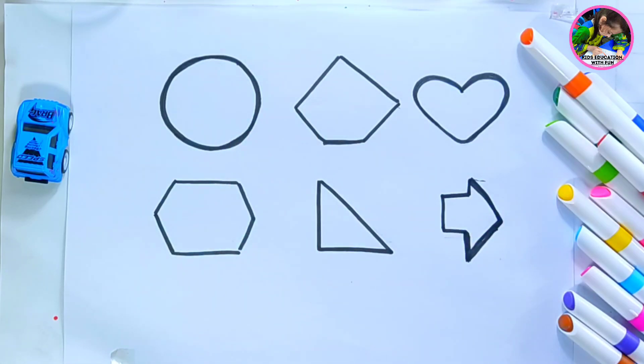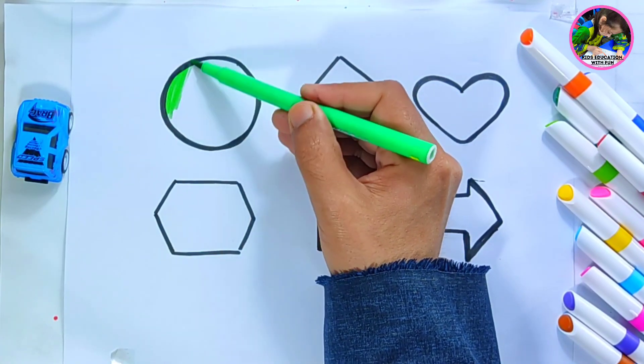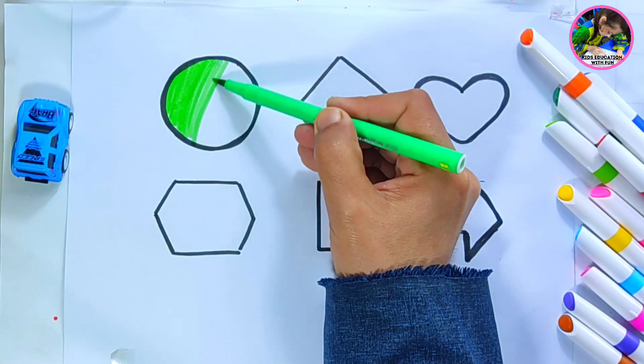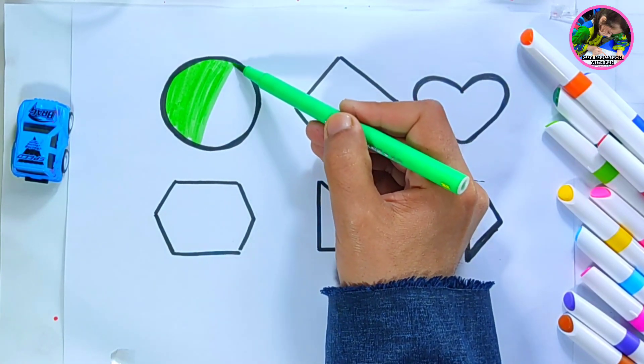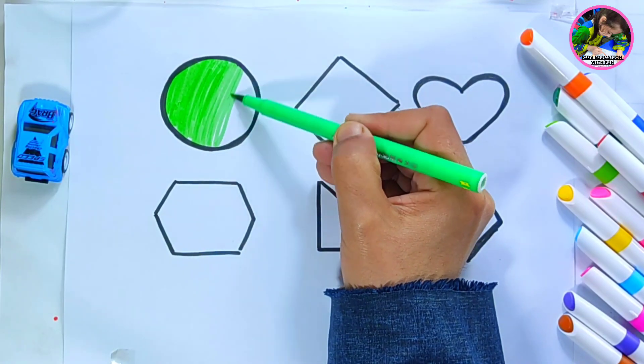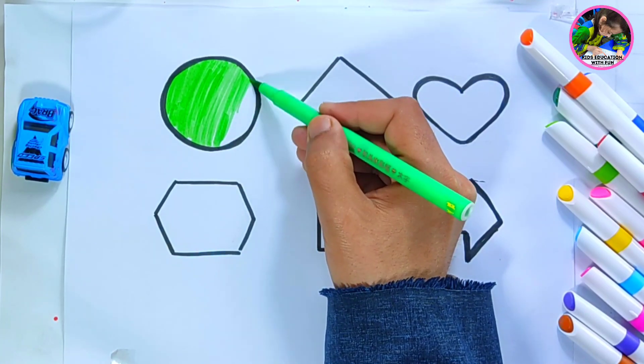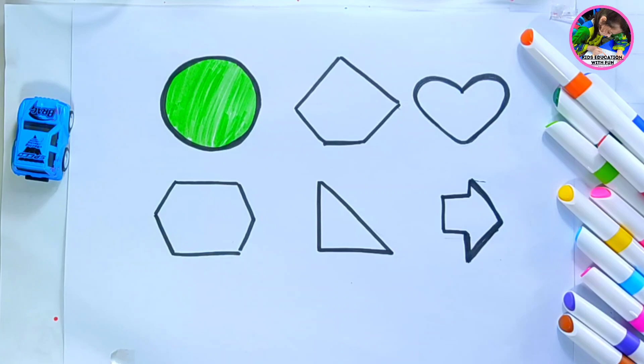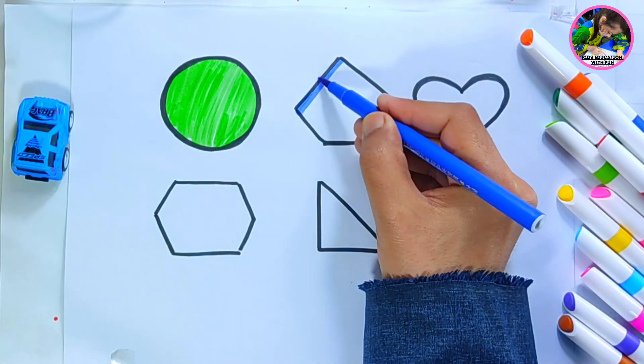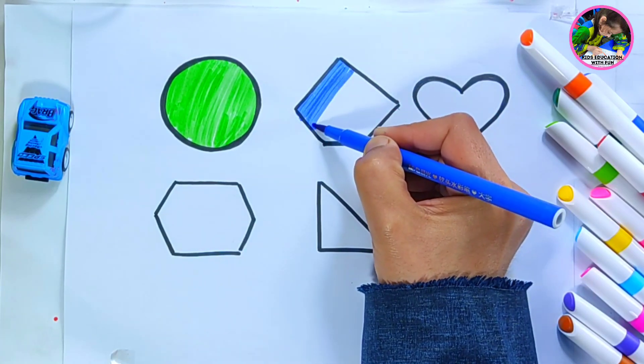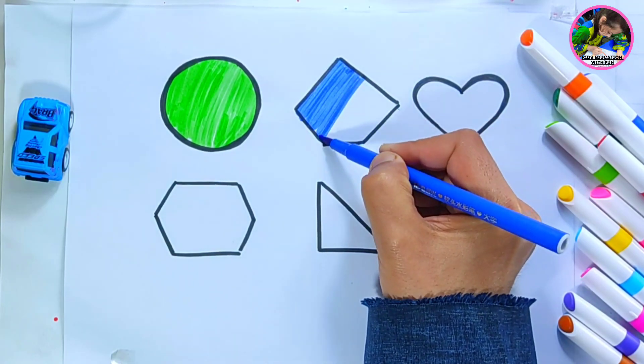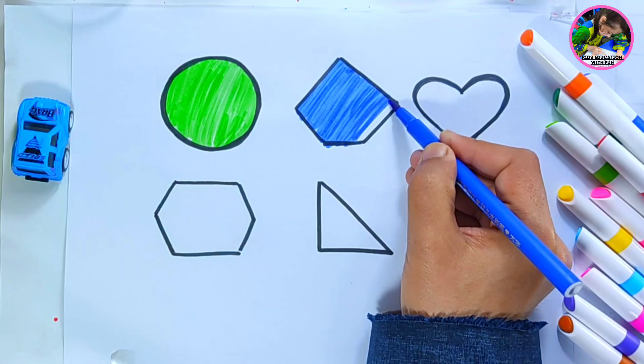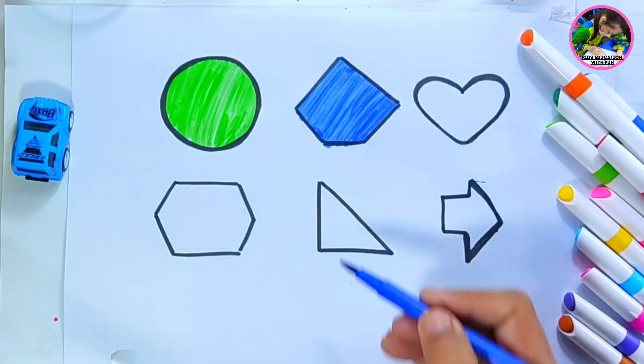Let's color these 2D shapes. Light green color - light green circle. This is dark blue color - dark blue pentagon.